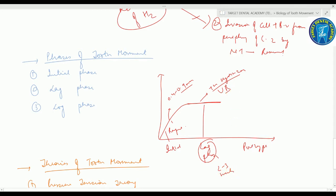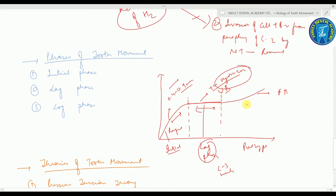The third is the post-lag phase. When the hyalinized zone is removed, bone undergoes resorption, there is an increase in tooth movement, and this is called frontal resorption. So: the initial phase has rapid tooth movement; the lag phase has undermining resorption due to the hyalinized zone; and the post-lag phase has frontal resorption with osteoclastic activity and rapid tooth movement.